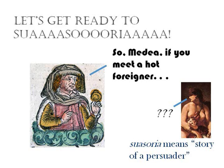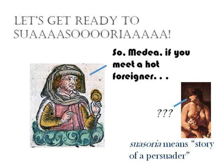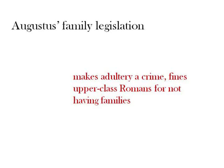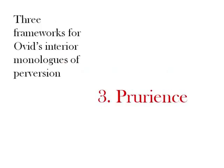And just as he was using tragedy to take apart the integrity of what it means to be a decision-making human, here he's using rhetoric to make it clear to the Romans who were reading — who would have been products of this system of rhetorical education — that their rhetorical education is too pat, that it doesn't answer the need when you come up against something like this perversion. And in turn, when you come up against something that creates this as perversion, that is, Augustus' family legislation. So there you have tragedy and rhetoric. Now we move on to prurience.